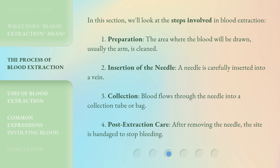In this section, we'll look at the steps involved in blood extraction. 1. Preparation: the area where the blood will be drawn, usually the arm, is cleaned. 2. Insertion of the needle: a needle is carefully inserted into a vein. 3. Collection: blood flows through the needle into a collection tube or bag. 4. Post-extraction care: after removing the needle, the site is bandaged to stop bleeding.